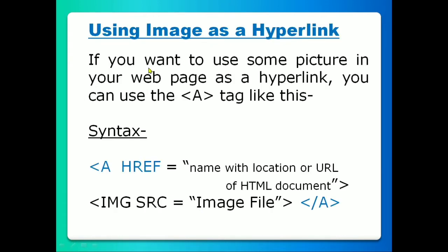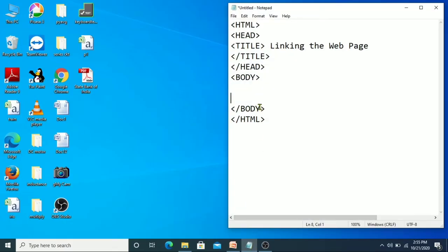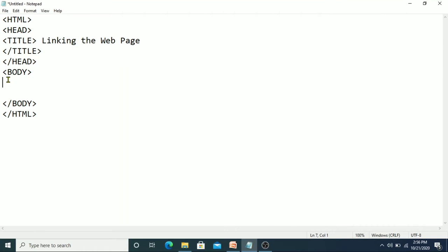Using an image as a hyperlink: if you want to use a picture in your web page as a hyperlink, you can use the anchor tag like this. The syntax is: a href="name or URL of the html document" then here you give the image path instead of any text, and also we have to close the tag because it is a container tag. So let's start coding — first you have to open Notepad, where I already have the basic structure of HTML typed.